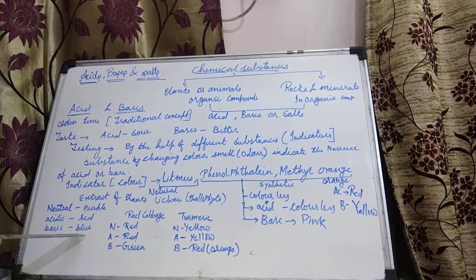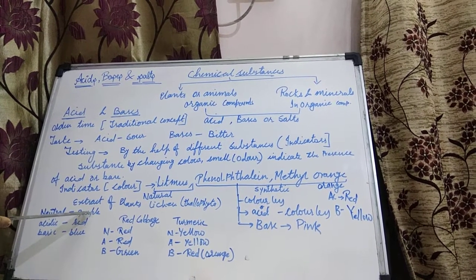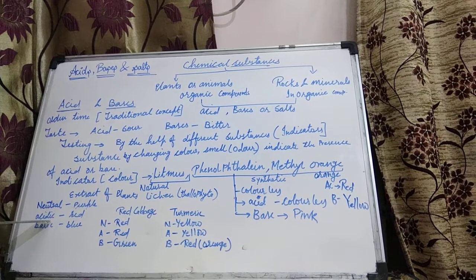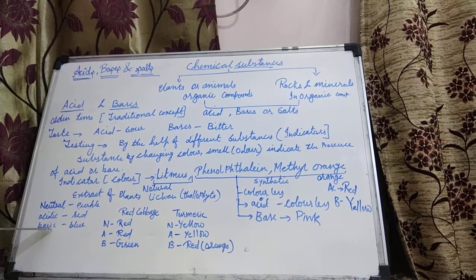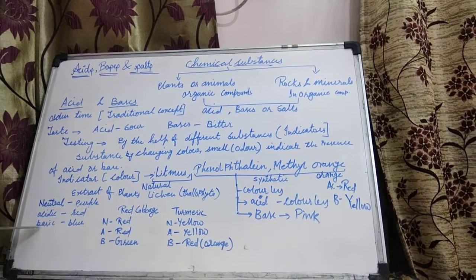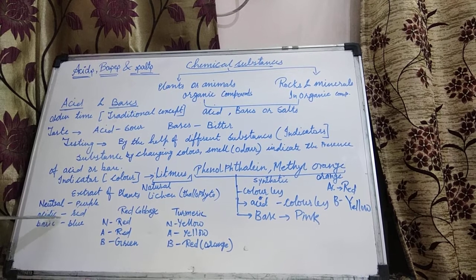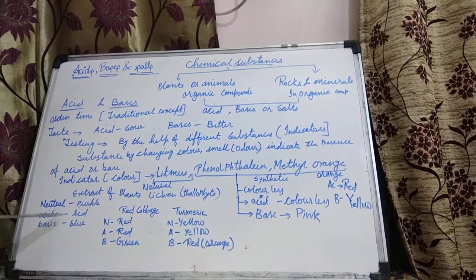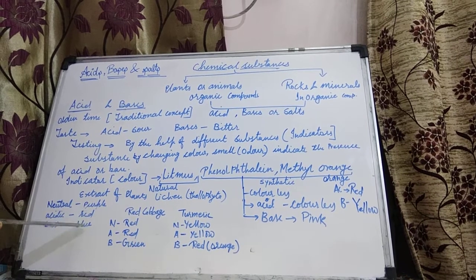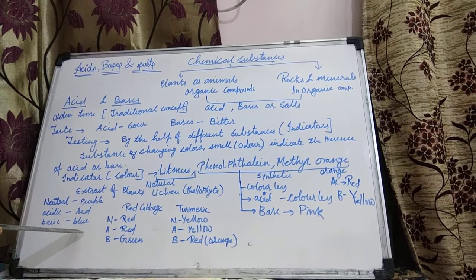In summary, if purple litmus is changing to red, that means the substance is an acid. And if the substance is changing purple litmus to blue, then the substance is basic. That's why we say that if blue litmus changes to red, the substance is acidic, and if red litmus changes to blue, the substance is basic.